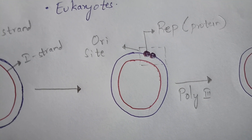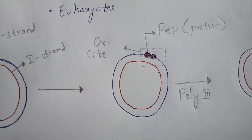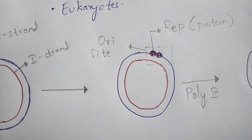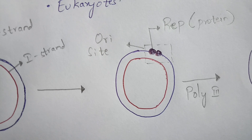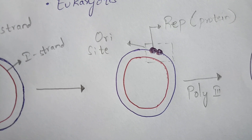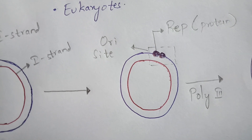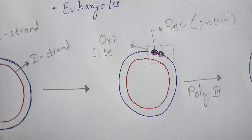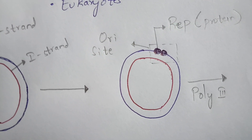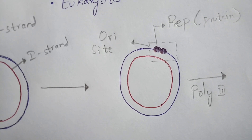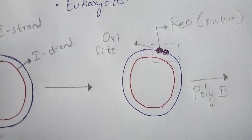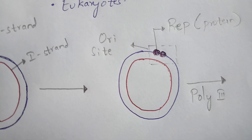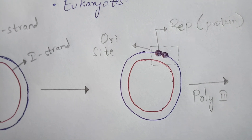The replication initiator protein will be attached to the second strand — the blue color strand. Due to this protein, the second strand will be broken. Here I have mentioned the ori site, which means origin site of replication — the site where the initiation of replication takes place is known as the origin site.